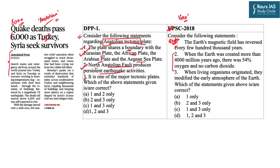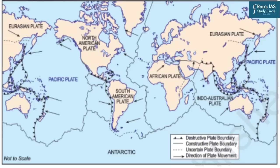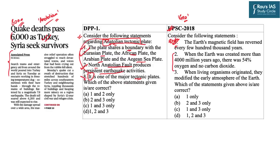Coming to statement three: it says the Anatolian tectonic plate is one of the major tectonic plates. This is incorrect because there are just seven major plates. Therefore, statement three is incorrect, and eliminating it gives us option A — one and two only — as the correct answer to the DPP question. For the UPSC 2018 previous year question, the correct answer is option C: one and three only, meaning statement two in that question is incorrect.